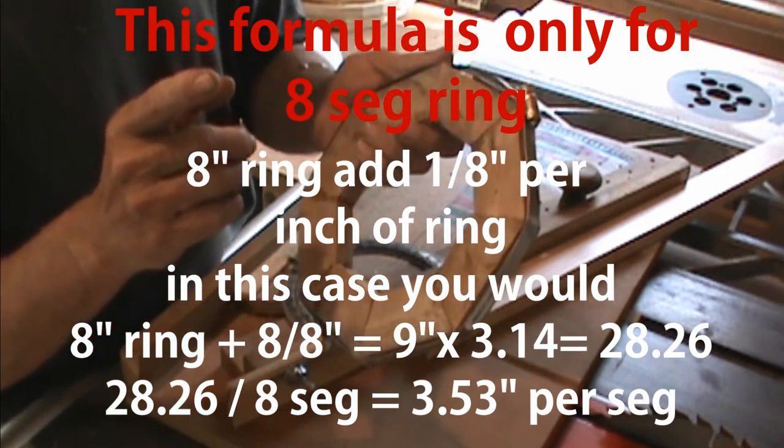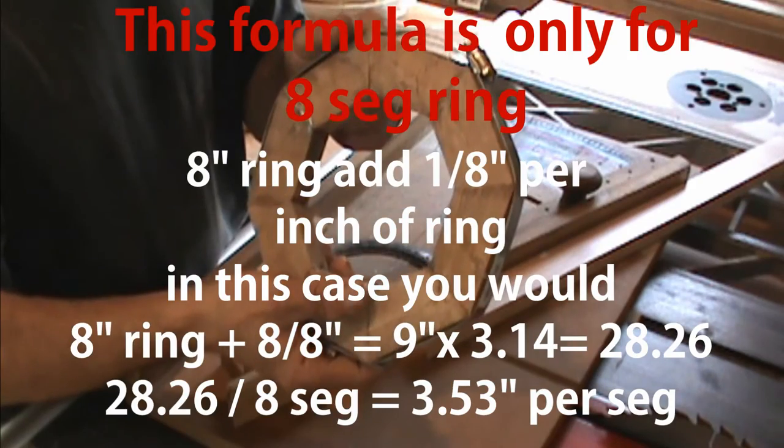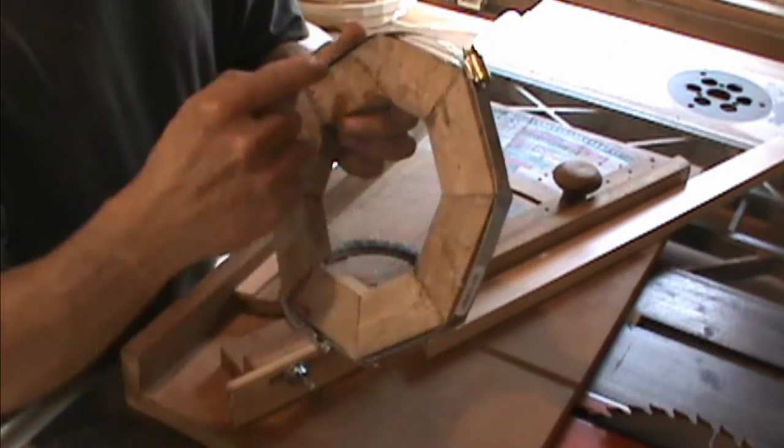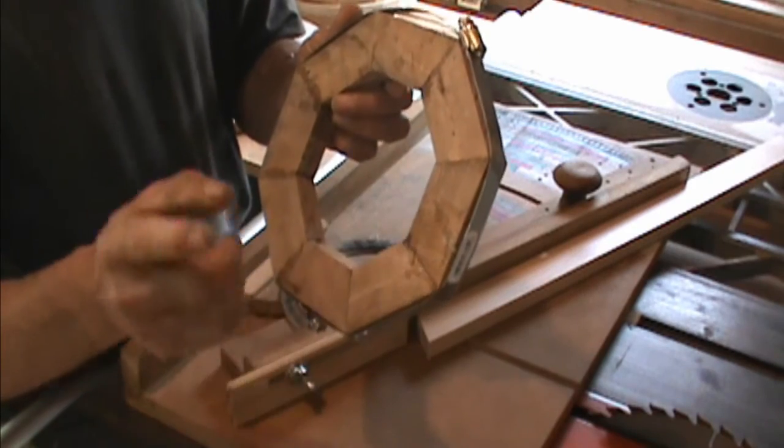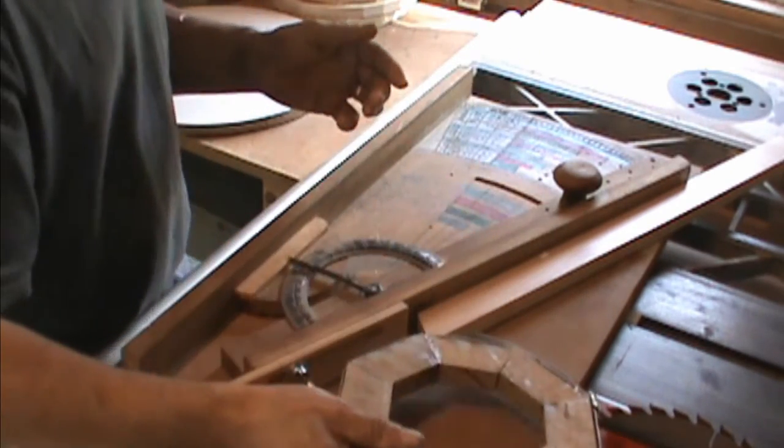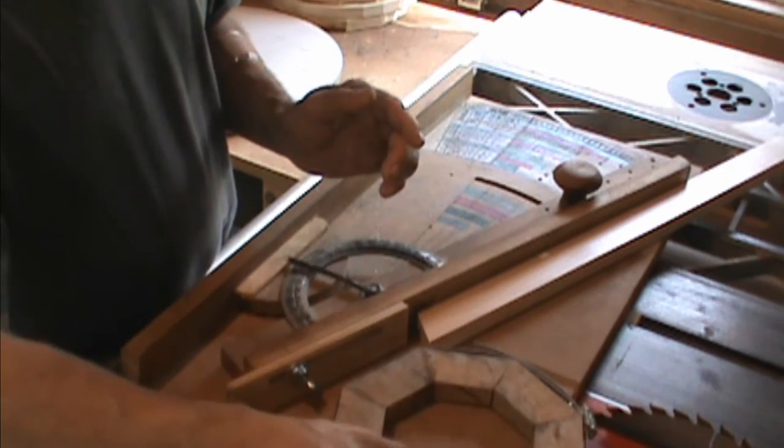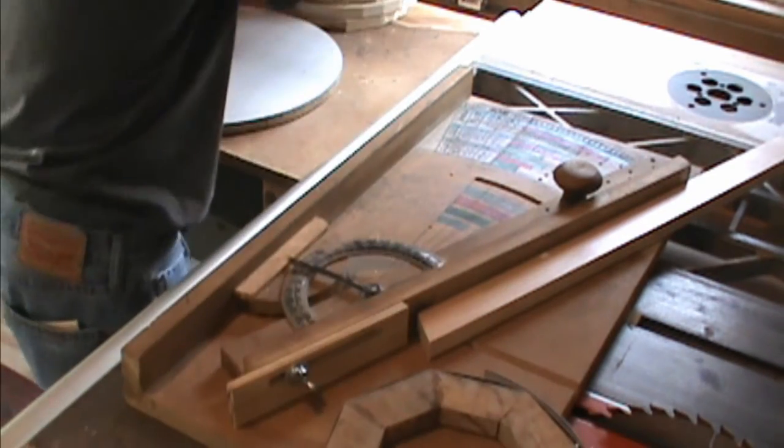That works for eight segments with adding one-eighth of your circumference. If you do, for instance, a ten-segment, well, you don't need one-eighth anymore, because a ten-segment ring, the angles are already getting tighter together.